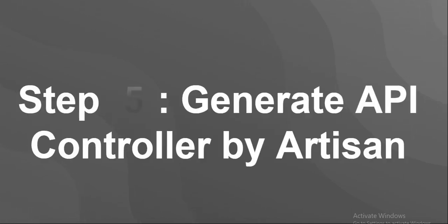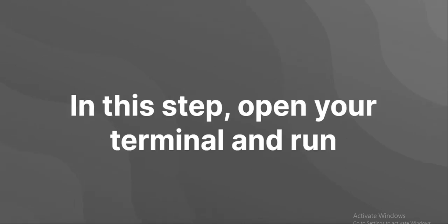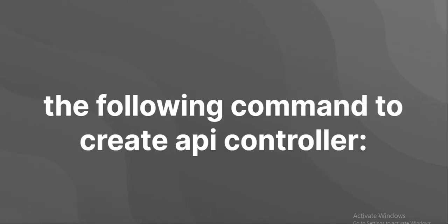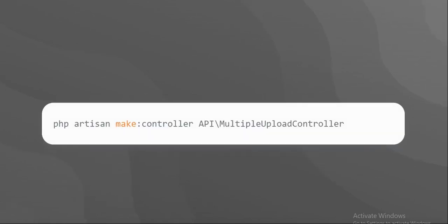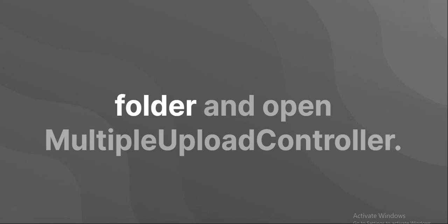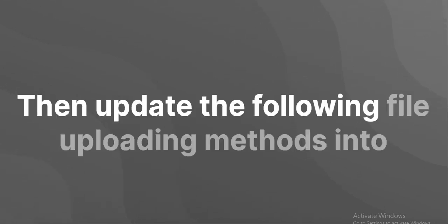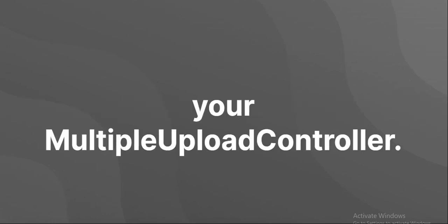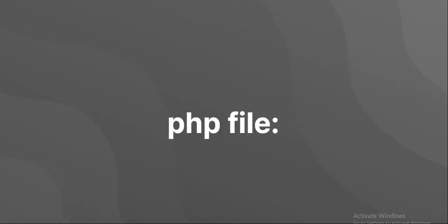Generate API controller by artisan. Use your terminal and the following command to create an API controller. Navigate to the app/Http/Controllers/API folder and open MultipleUploadController.php. Then update the following file uploading methods into your MultipleUploadController.php file.